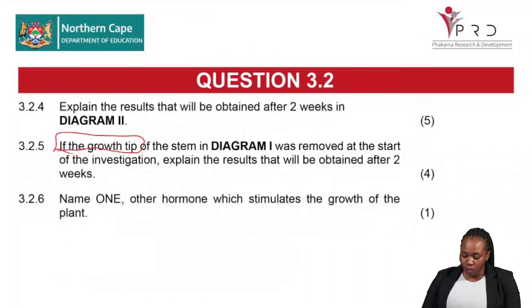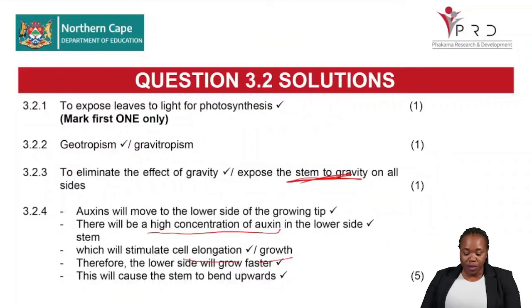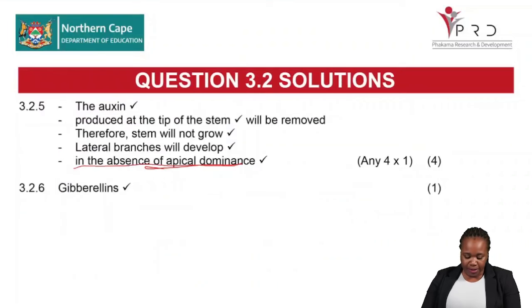Question 3.2.6 asks to name one other hormone that stimulates the growth of the plant. The answer is gibberellins.